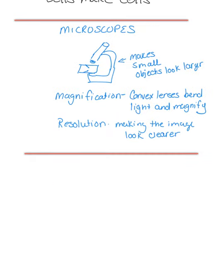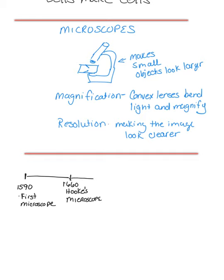I also wanted to add at the very bottom a quick timeline of the discoveries over time. In 1590, we had the first microscope. In 1660, we had Hooke's compound microscope. In 1683, we had Leeuwenhoek's simple microscope. In 1838, we had Schleiden's discovery that plants are made of cells.